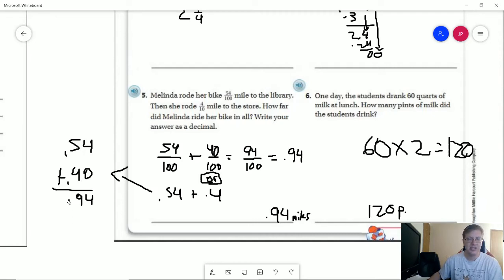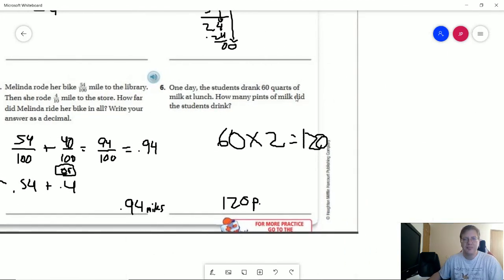We're going to line everything up in the center based on the decimal point. We're not going to have a .54 and then put the decimal point in the wrong place. That's going to give us an accident that's going to result in a wrong answer. And so number six, we can do 60 quarts times two pints in a quart to get 120 pints. So those are the problems for the homework.